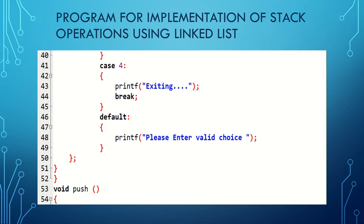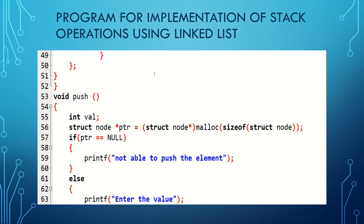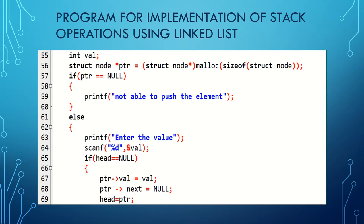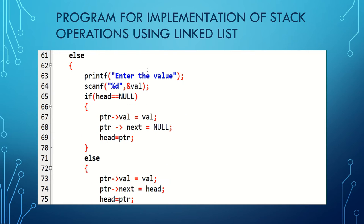In void push, the integer value is the data for the node. Memory is allocated to the address field. If ptr equals null, it prints 'not able to push the element' — meaning there is no place in the stack. Otherwise, the user is prompted to enter the value. If head equals null — meaning no nodes are present — pointer value is set to the entered value, pointer next is set to null, and head is set to pointer. The node is successfully inserted.